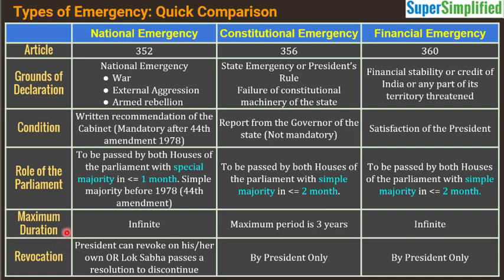What is the maximum duration for which national emergency can be sustained? In the case of national emergency, there is no fixed duration — it can be maintained for an infinite period. However, there is a provision that it must be periodically reviewed and renewed. In the case of President's Rule, it cannot be imposed in any state for more than three years — before that, elections must be held and a permanent state government and legislature must be established.